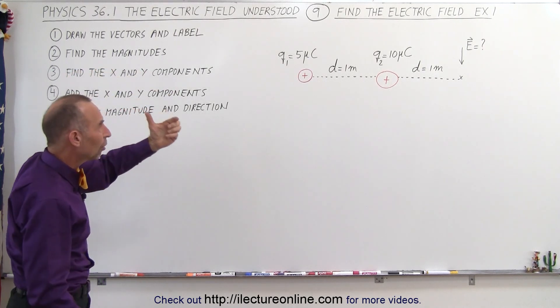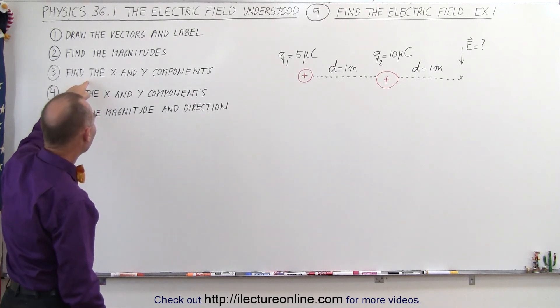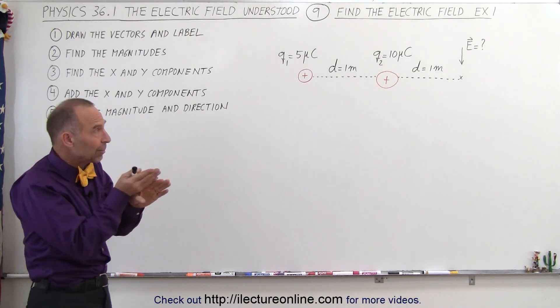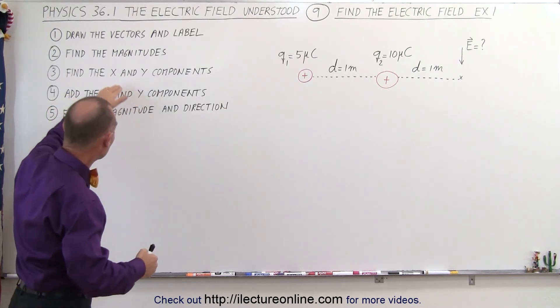Then find the magnitude of the individual electric fields caused by each of the charges, then find the x and y components. In case they're not all on the same line, that won't be necessary here, but when they're not on the same line we'll have to do step three.